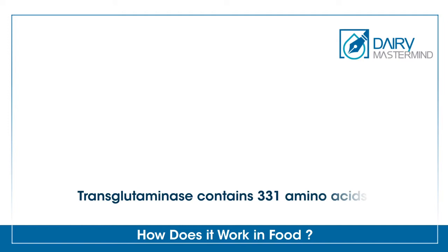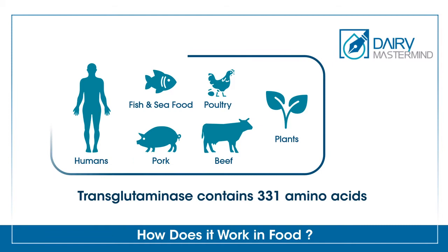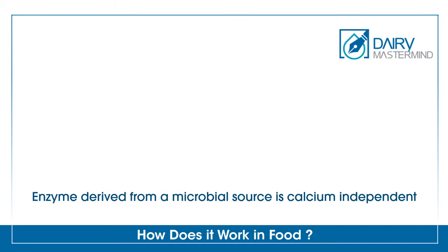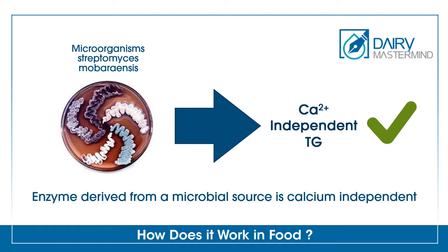Transglutaminase contains 331 amino acids and is naturally found in the human body, in poultry, fish, pork, beef and plants. This type is calcium-dependent. An enzyme derived from a microbial source is calcium-independent, so it is suitable for use in food applications because foods like dairy products contain calcium, and this calcium can inhibit the enzyme activation.